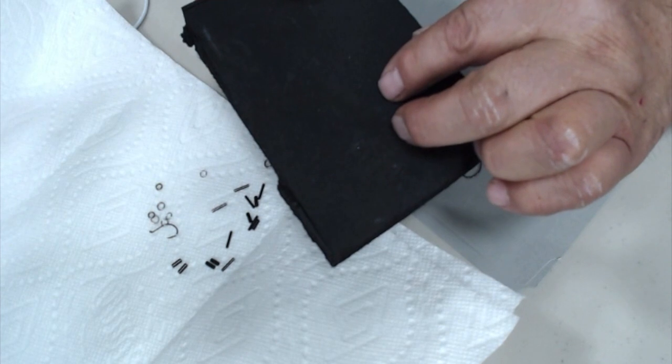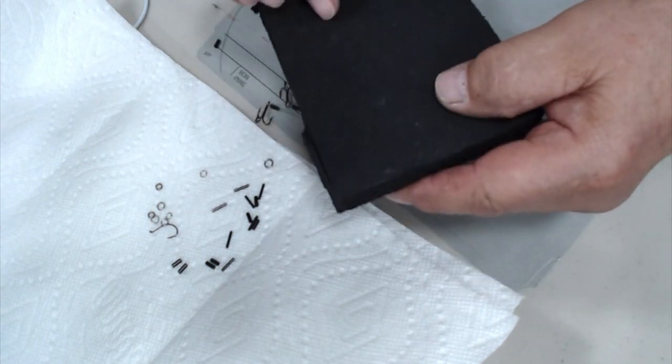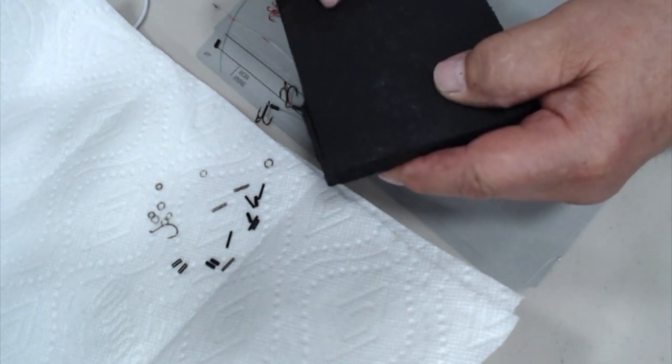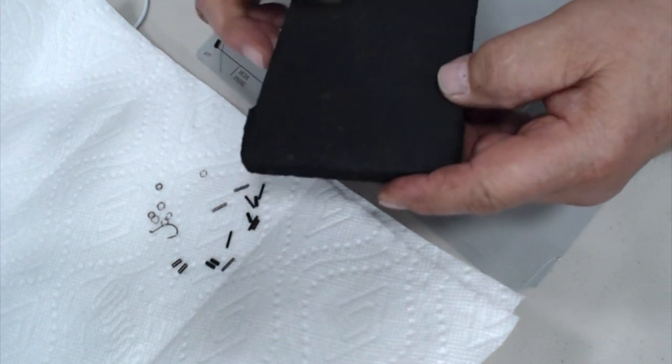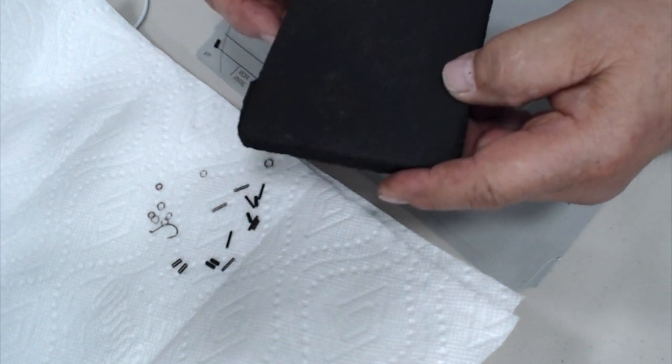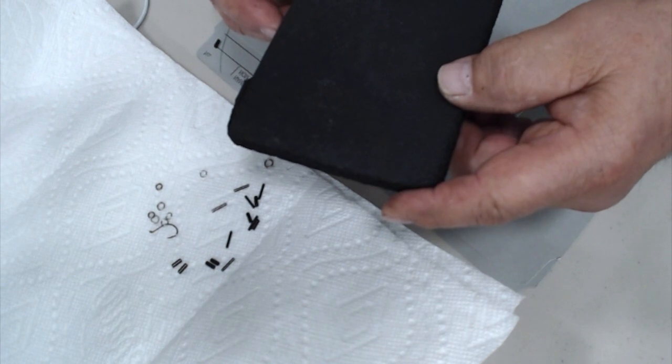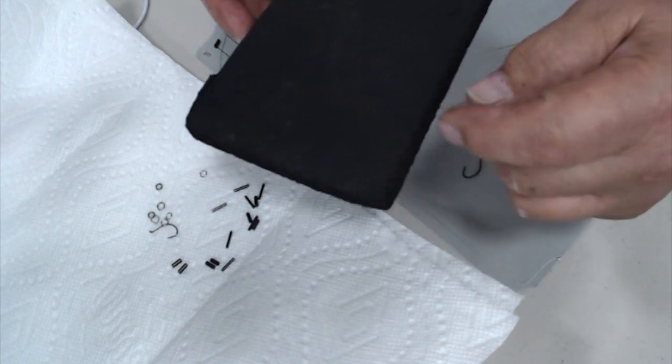Closed cell foam is important because you can anchor your hooks in here, but because of the way it's made it doesn't attract water. So it could be sitting and open in a boat, you could have a hundred hooks on here, and at the end of the season you won't find rust on your hooks like you would any other conventional storage.